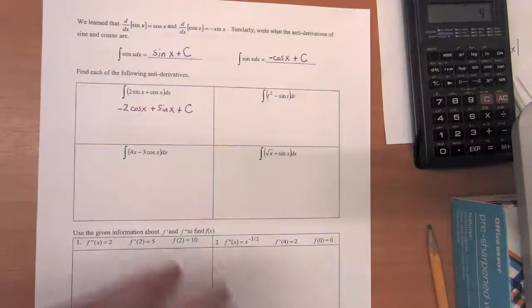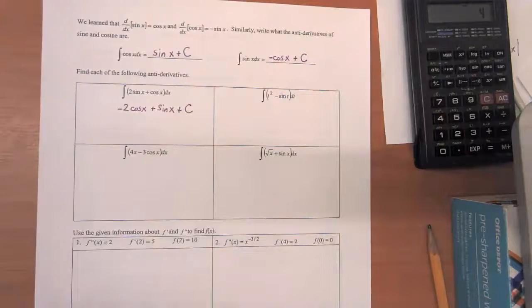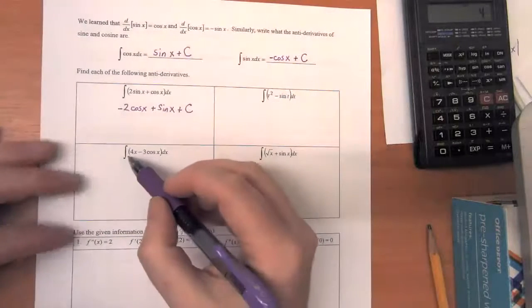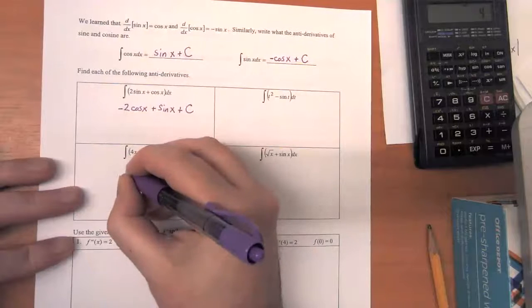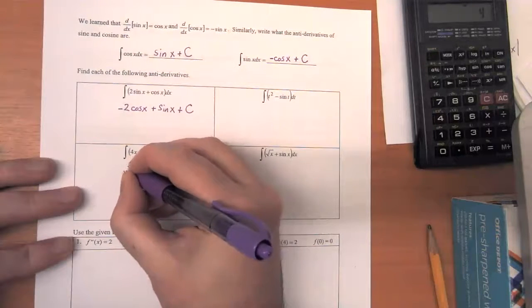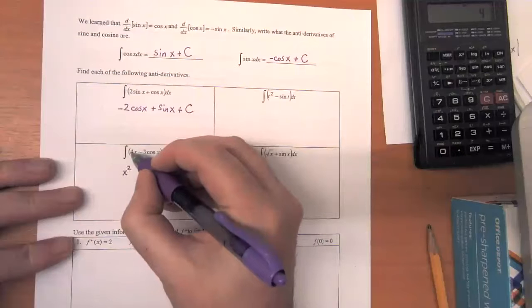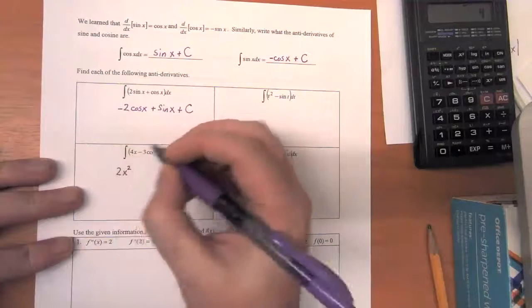So once again, we're just going to take the antiderivative of each term. So the antiderivative of 4x - we add one to the exponent, so it'll be x squared and then four divided by two is equal to two.